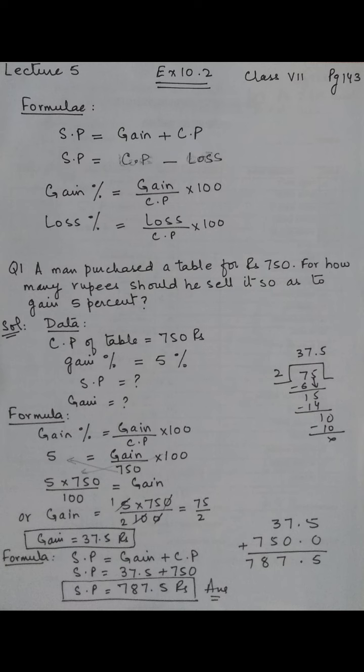We add the gain of 37.5 to 750, which gives us 787.5. So the answer is SP is equal to 787.5 rupees.